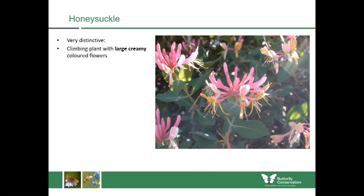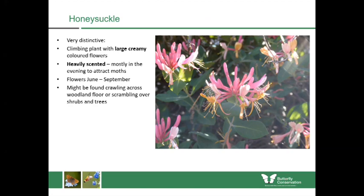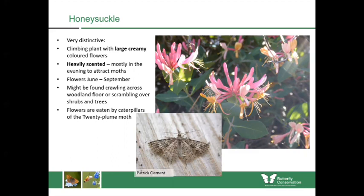Honeysuckle is very distinctive and hard to confuse with anything else — it's a climbing plant with large creamy-coloured flowers that start off pink but change colour. It's really heavily scented, making most of its scent in the evening to attract night-flying moths, and flowers from mostly June until September. You might also see it crawling across forest floors until it gets enough light to grow upward. The caterpillars of the twenty-plume moth feed upon honeysuckle flowers — a beautiful moth with almost plume-like features along each wing which can be seen at almost any time of year as it has several generations.